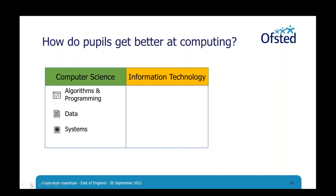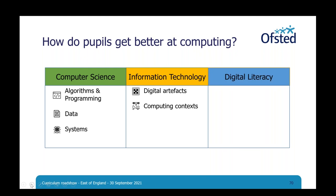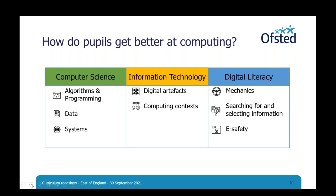The second category, information technology, organizes knowledge of how computers are used purposefully. Within that category we might see knowledge of digital artefacts — knowledge of and how to create digital objects. And also knowledge of computing context: how computing is used in various ways, technologies, and what technology legalities and ethics underpins those uses. Finally we have digital literacy, which is knowledge of how to use technology in an effective, responsible and safe manner — from the mechanics of using computing devices through to searching for and selecting information, to that important knowledge taught as part of e-safety. We might simply summarize these categories as: the knowledge of how computers work, the knowledge of how they can be used, and the knowledge of how computers can be used effectively and safely.